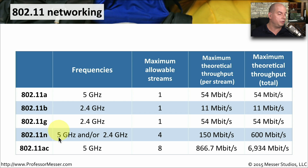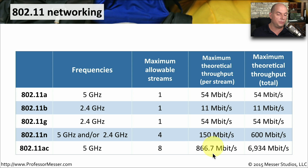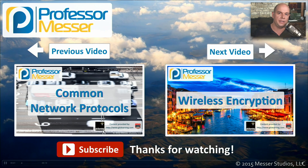802.11n can use 5 gigahertz, 2.4 gigahertz, or both simultaneously, with up to four streams at 150 megabits per second for a total of 600 megabits of throughput. The 802.11ac standard is a 5 gigahertz standard with eight streams running at 866.7 megabits per second, giving a total maximum theoretical throughput of nearly 7 gigabits per second.